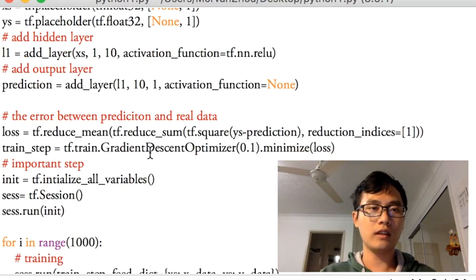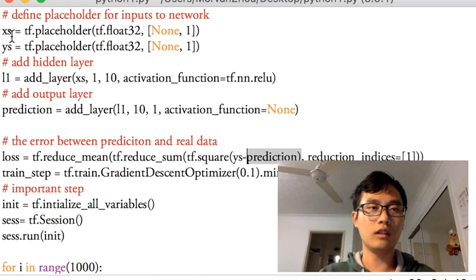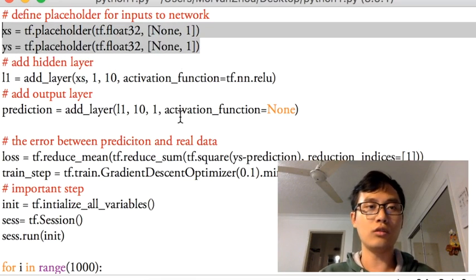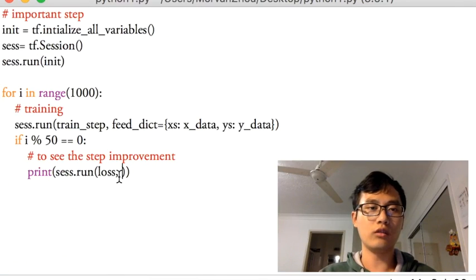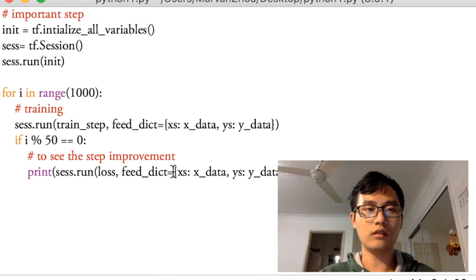If we're going to plot the loss, the loss is something that's based on ys and prediction, and the prediction is something based on xs. So we're still going to use ys and xs, these two placeholders. So we're going to pass the value for these two placeholders. And just copy and paste. This is the same step.